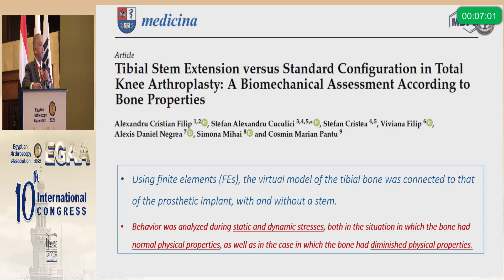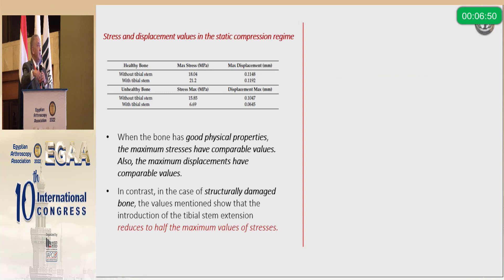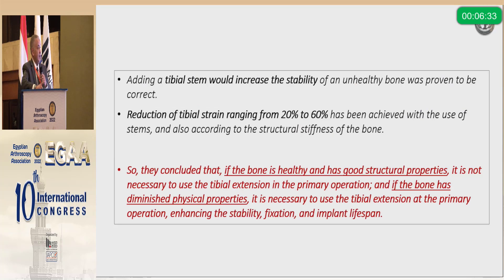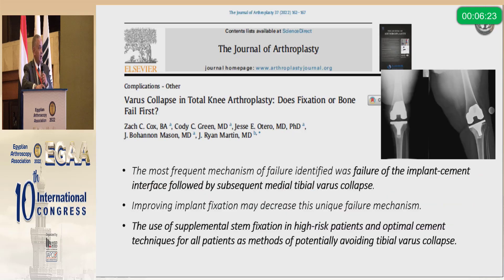A biomechanical study using finite element analysis with a virtual model assessed static and dynamic stresses on normal and degraded bone, finding that adding a tibial stem to unhealthy bone would reduce maximum stresses and maximum displacement by half. Regarding load cycles to failure, adding a stem would more than double the number of cycles needed before failure. Therefore, if the bone is healthy with good structural properties, there is no need for a stem — but once the bone has diminished physical properties, it is essential to use a tibial stem.